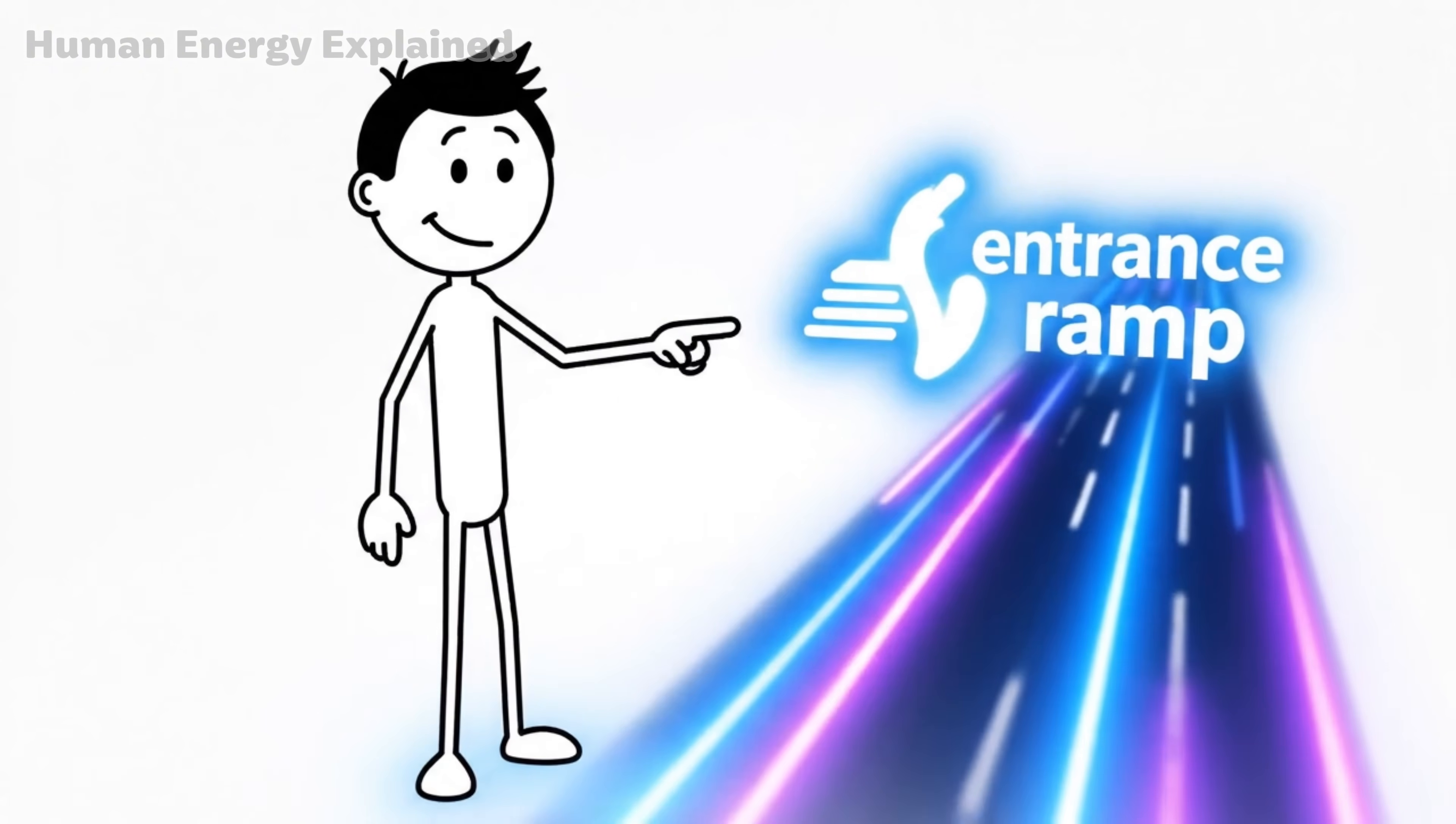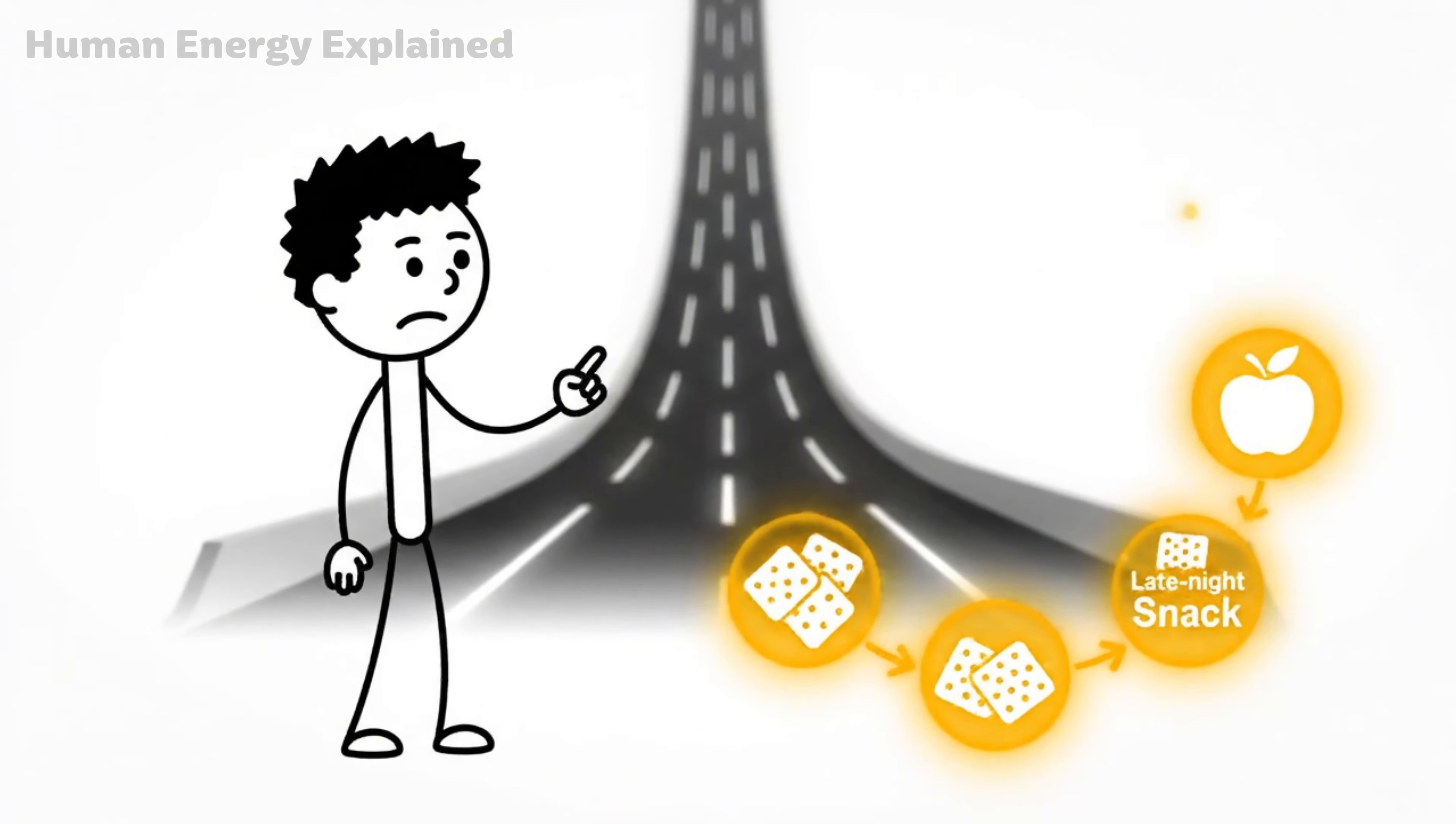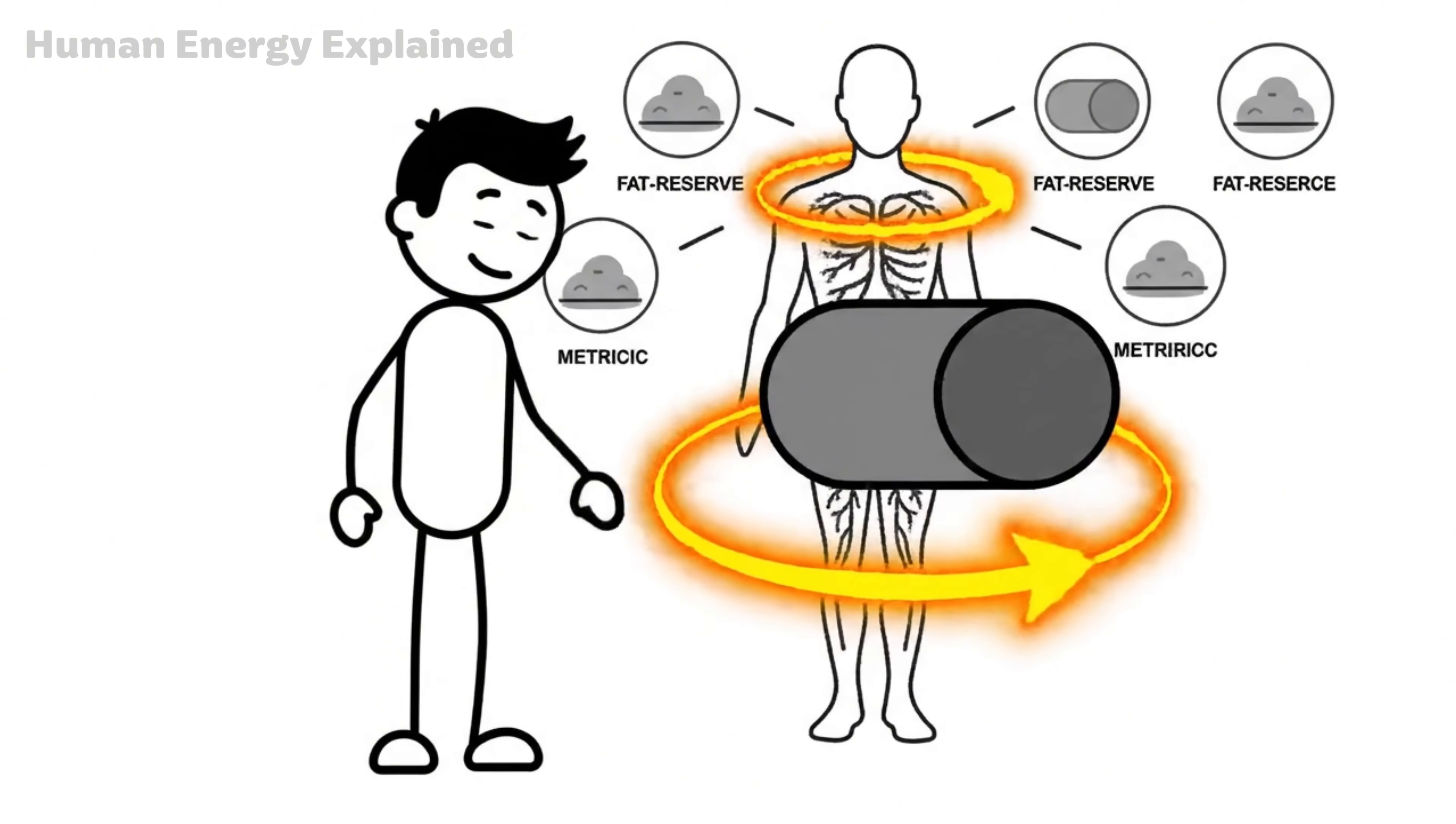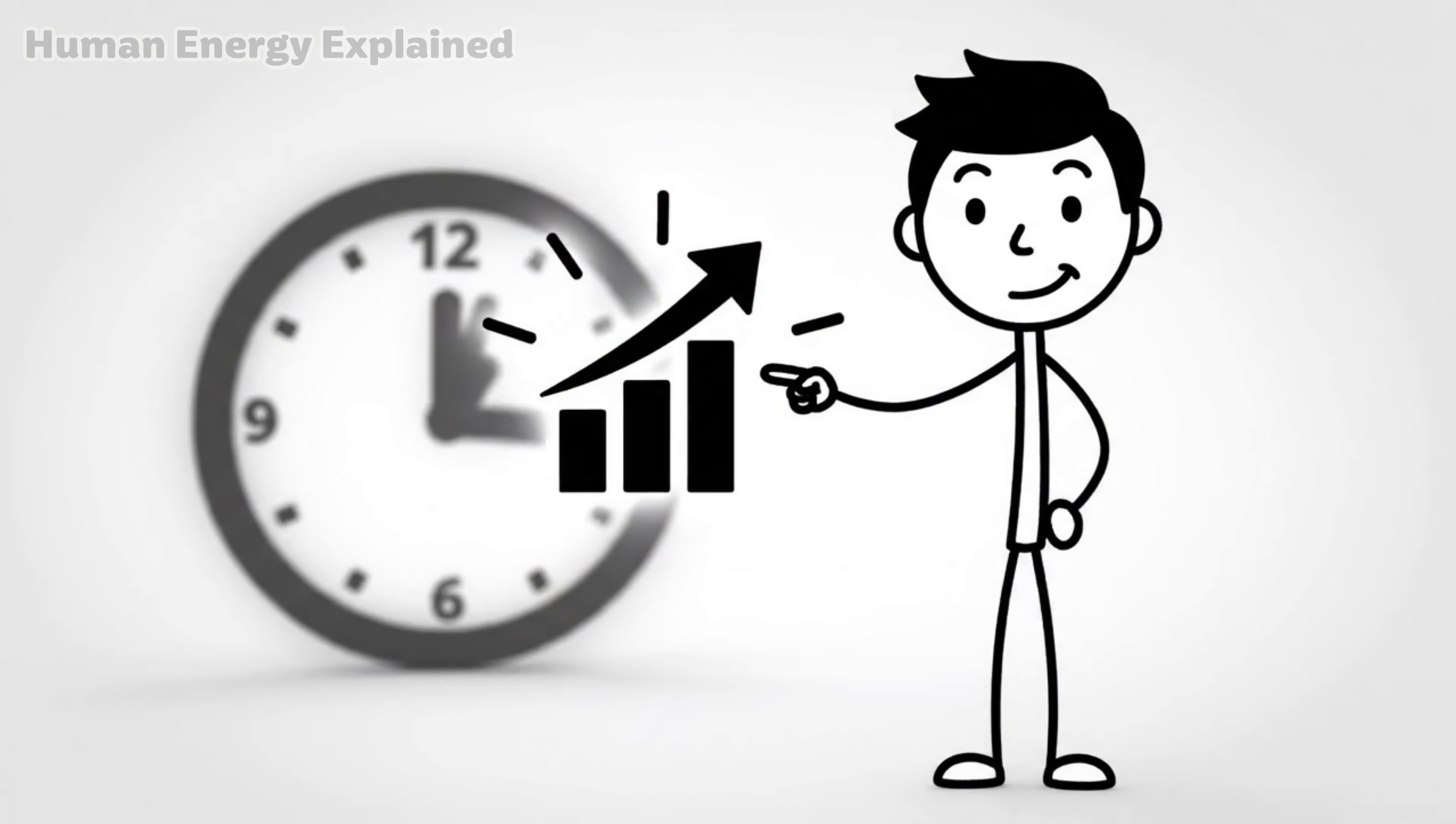Here's the thing most people miss. If you eat throughout your waking hours—breakfast, snacks, lunch, more snacks, dinner, maybe a late-night bite—your body never gets past this phase. The metabolic switch never gets a chance to flip. You stay permanently in storage mode, running on glucose, never tapping into your fat reserves. Most people never even reach the 12-hour mark. And that's a missed opportunity. But this is just the warm-up.